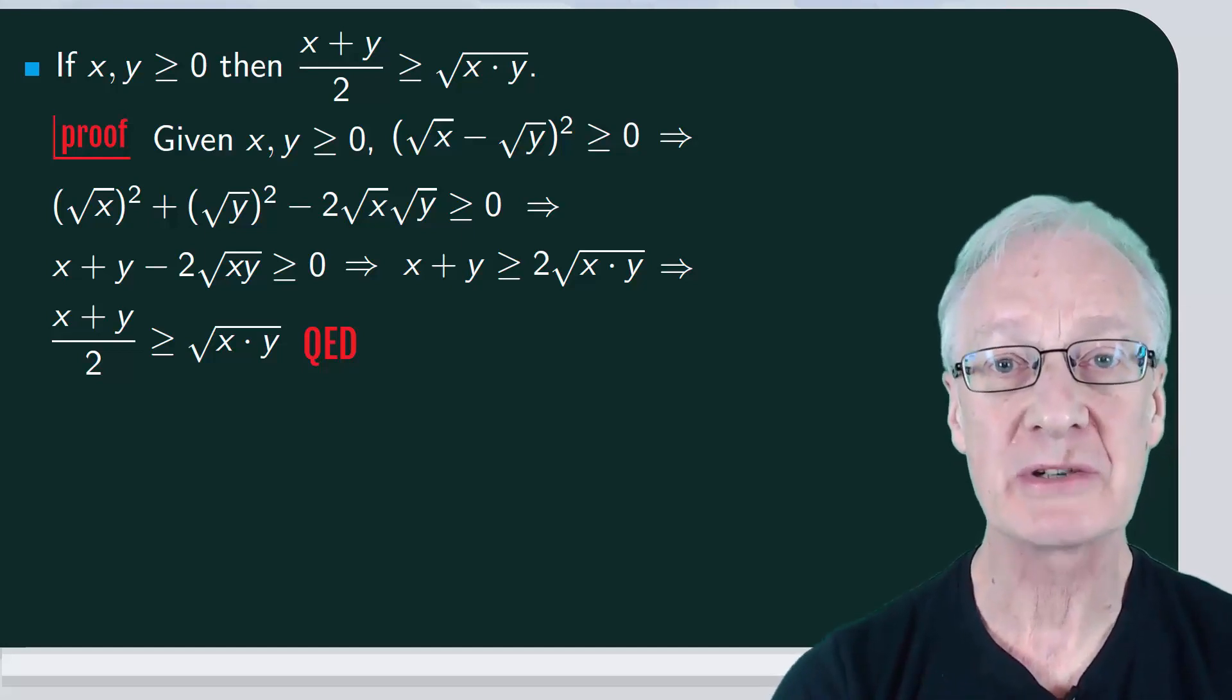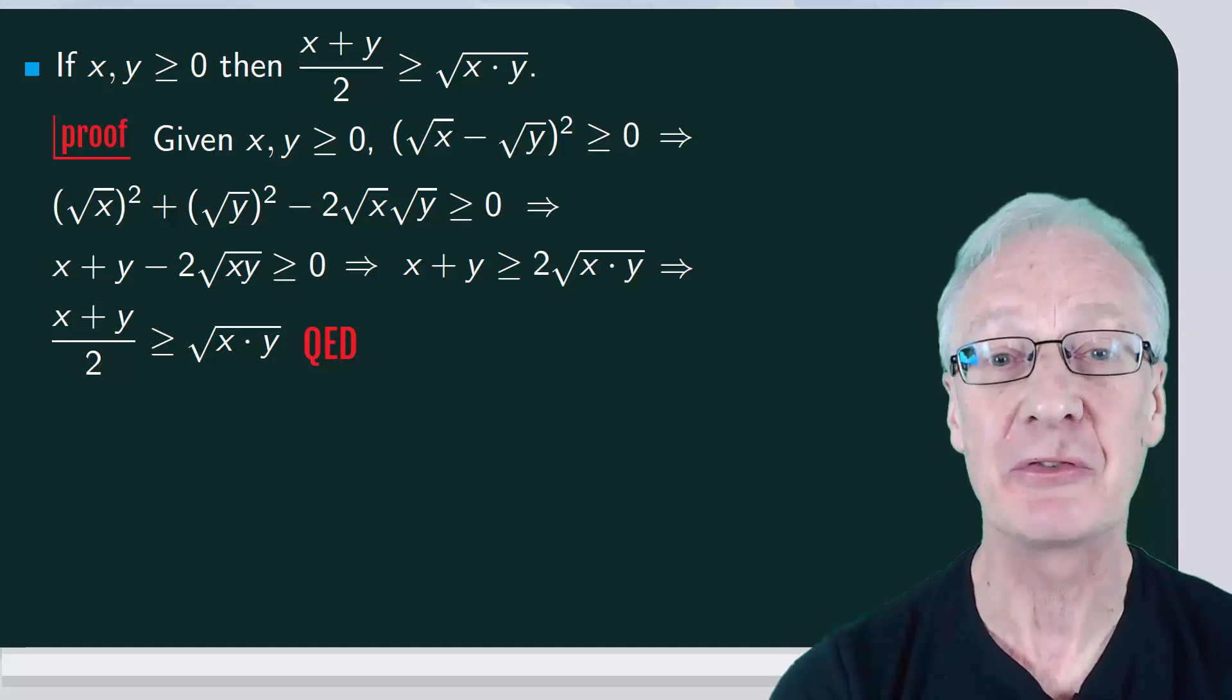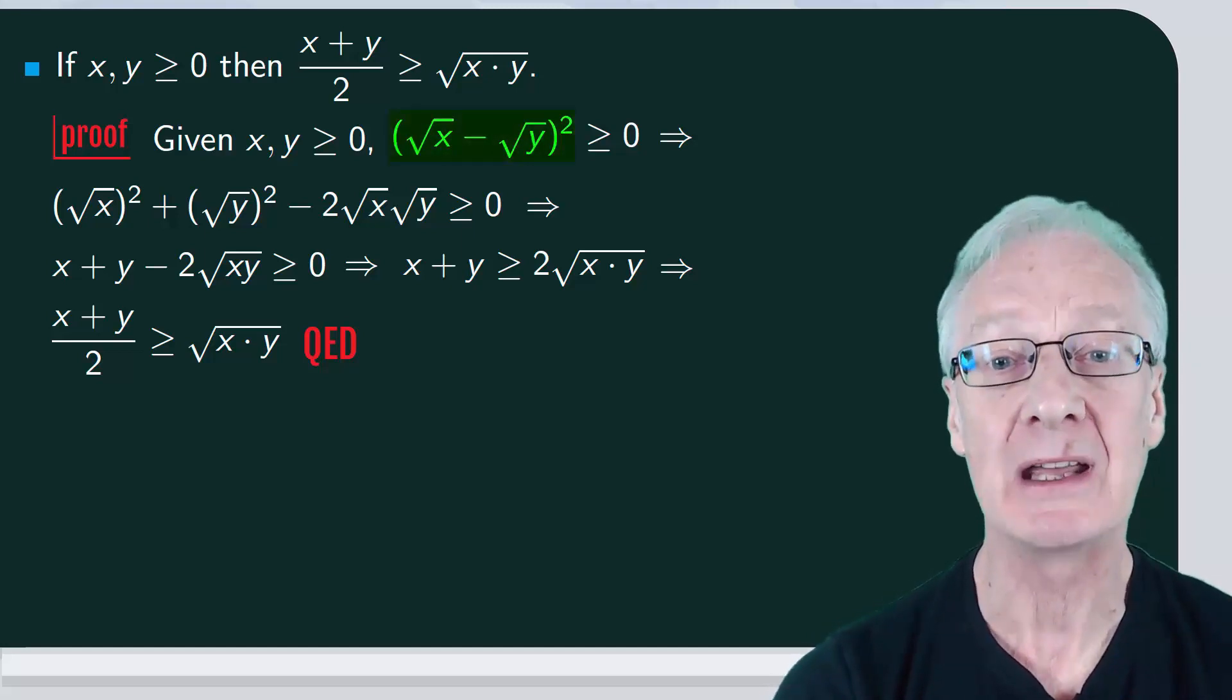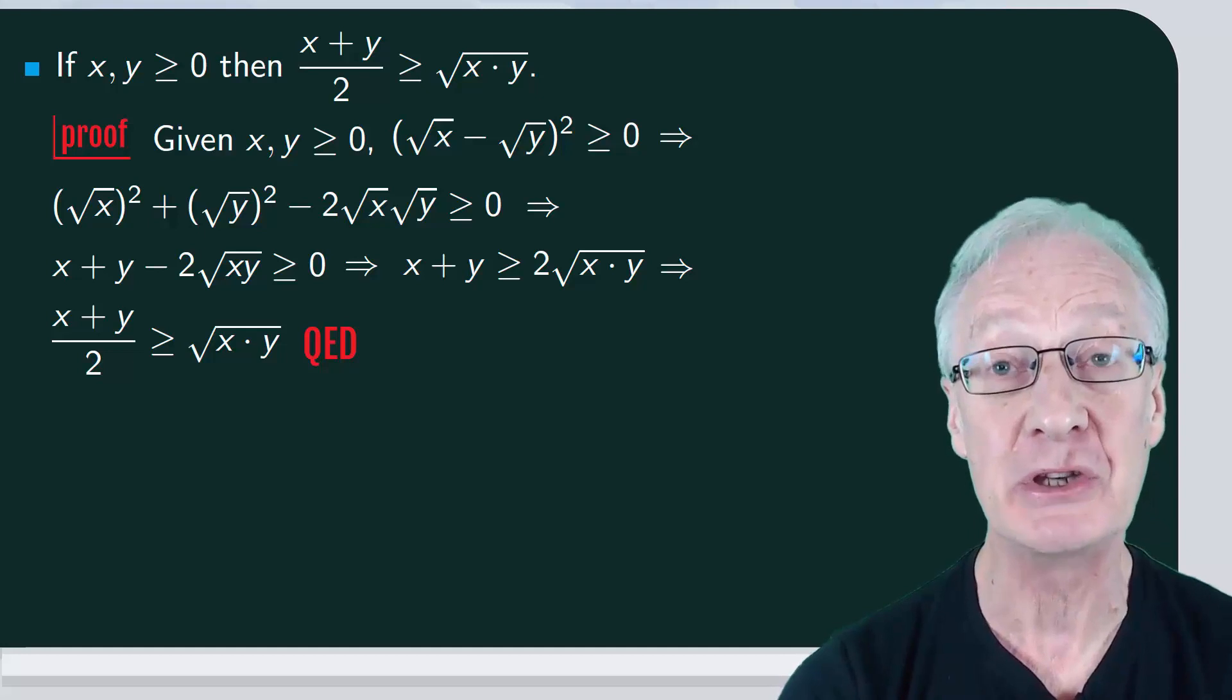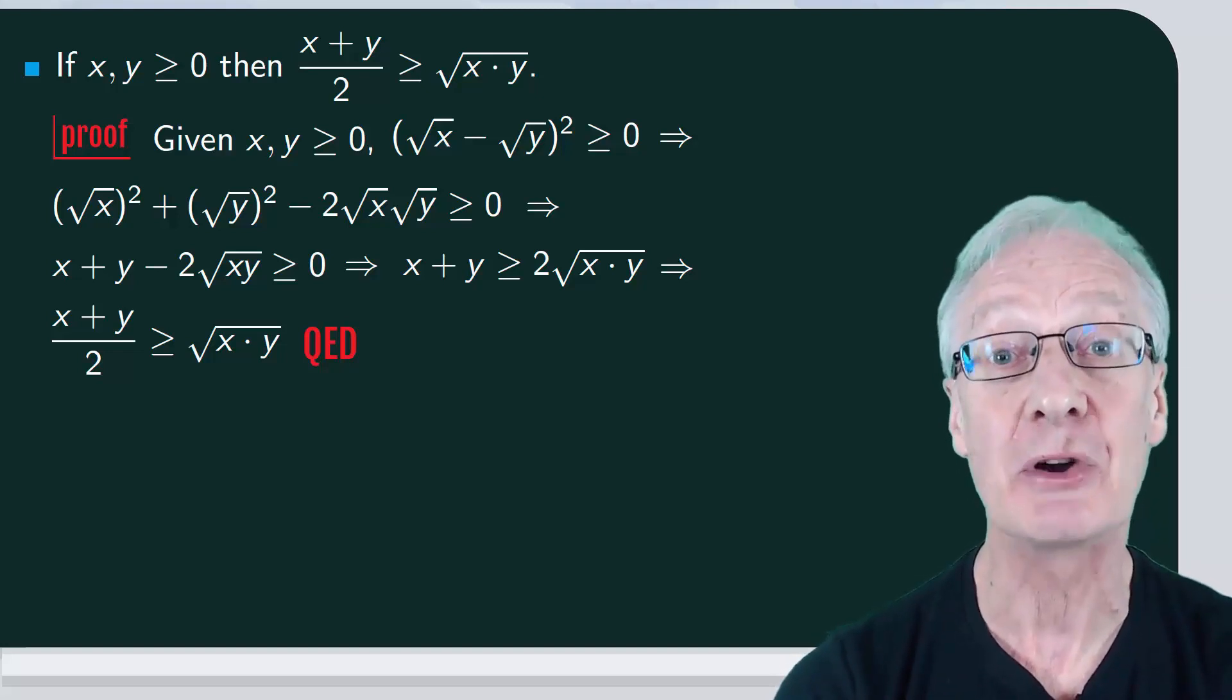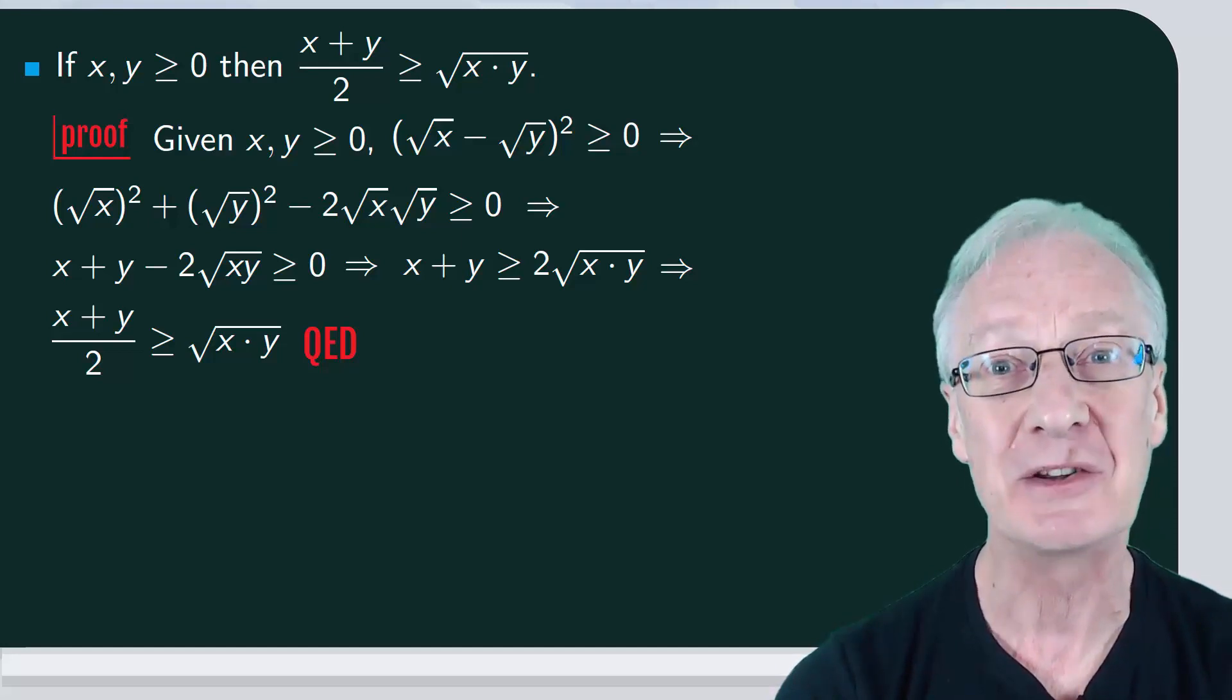Now here's an important point. Someone looking at our proof might think, that's a clever idea. I'd never have thought of considering the square of root x minus root y. Proofs often seem beautiful and elegant when presented in their final form, but usually a great deal of work goes into them, including exploring lots of ideas. Many of these ideas may end up being discarded, but all make some contribution to showing the way to the final proof.